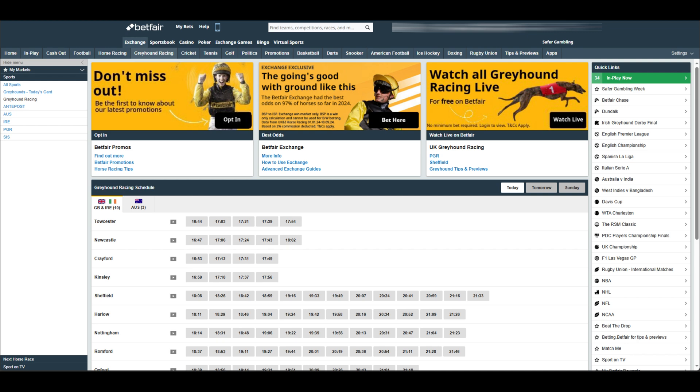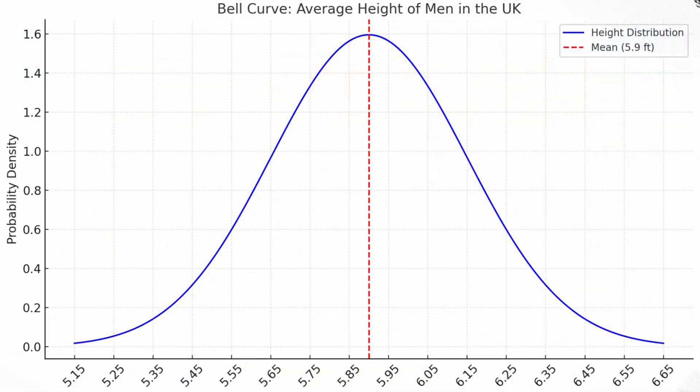I'll start with: what is a bell curve? A bell curve, also known as normal distribution, is a statistical graph that represents the distribution of a set of data. The curve is symmetrical and shaped like a bell, which is where it gets its name. It is one of the most common probability distributions in statistics and is used to model many natural phenomena. I'm showing you an example on the screen of a bell curve.